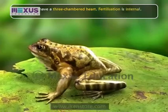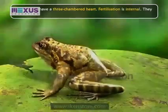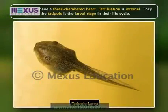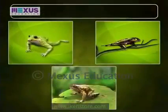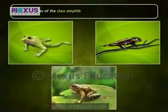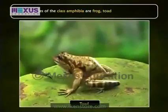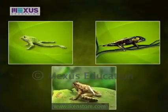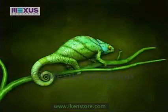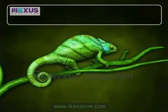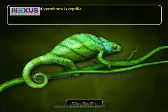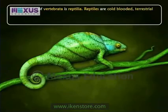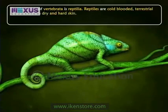Fertilization is internal. They lay eggs and the tadpole is the larval stage in their life cycle. Common examples of class Amphibia are frog, toad, and salamander, which are found in large numbers in various parts of the world.